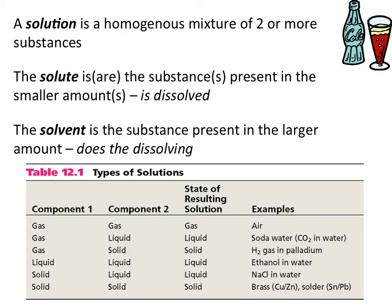A solution is a mixture that consists of two or more substances and is homogeneous in terms of characteristics. There are multiple parts to a solution. One part is the solute — the thing that is dissolved into the solution, usually present in a smaller quantity — and the other is the solvent, which does the dissolving and is present in larger quantities. Solutions can be any combination of solute and solvent: gas-gas mixtures, gas-liquid, and so on.